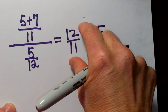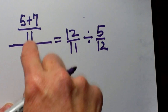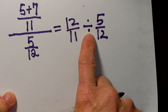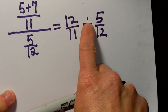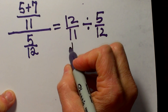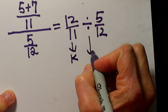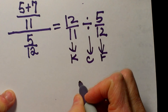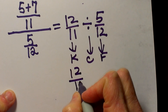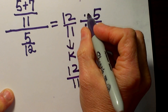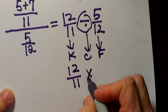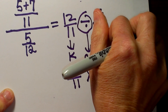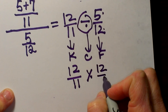So we are going from a hamburger to a hot dog — from a double stack to long and thin. Now we are going to change this from division to multiplication. To do that I use the rule keep it, change it, and flip it. So we are going to keep our first fraction as 12 over 11, change our sign from division to multiplication, and flip the fraction 5 twelfths to its reciprocal — 12 over 5.